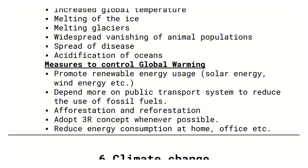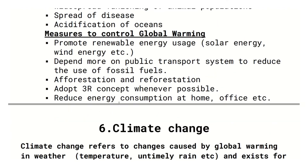Mitigation strategies include: afforestation and reforestation, adopting the 3R concept — reduce, reuse, recycle — to reduce energy consumption at home and office. Using public transport systems to reduce the use of fossil fuels helps control global warming.